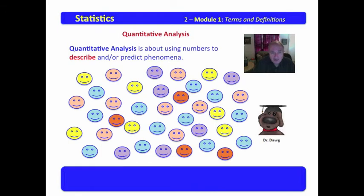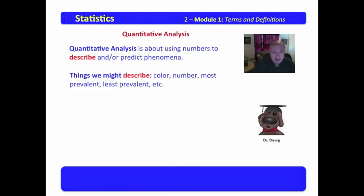Now, I want you to consider this large group of smiley faces of many varying colors. They are indeed delightful. We might describe some things about that group. We might look at color, number, what's most prevalent, least prevalent, and so on. These descriptors are called descriptive statistics. So the very first segment of quantitative analysis is that of descriptive statistics.